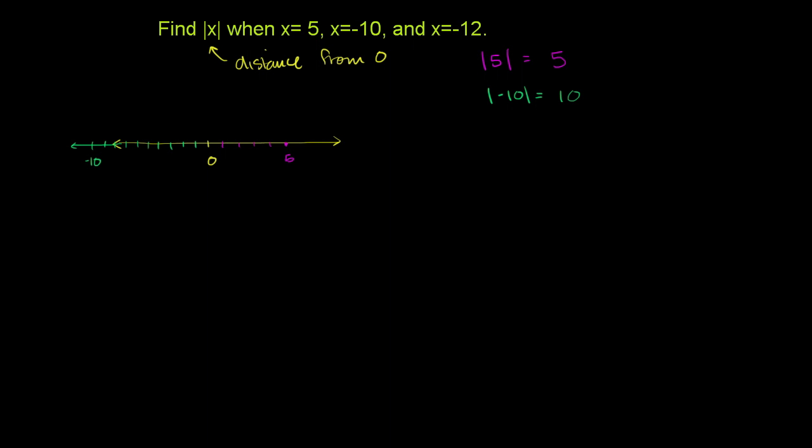Let's do one more. The absolute value of x when x is equal to negative 12. So we have the absolute value of negative 12. We don't even have to look at the number line. It's just going to be the positive version of negative 12. It's just going to be equal to 12. And this is just saying that negative 12 is 12 away from 0.